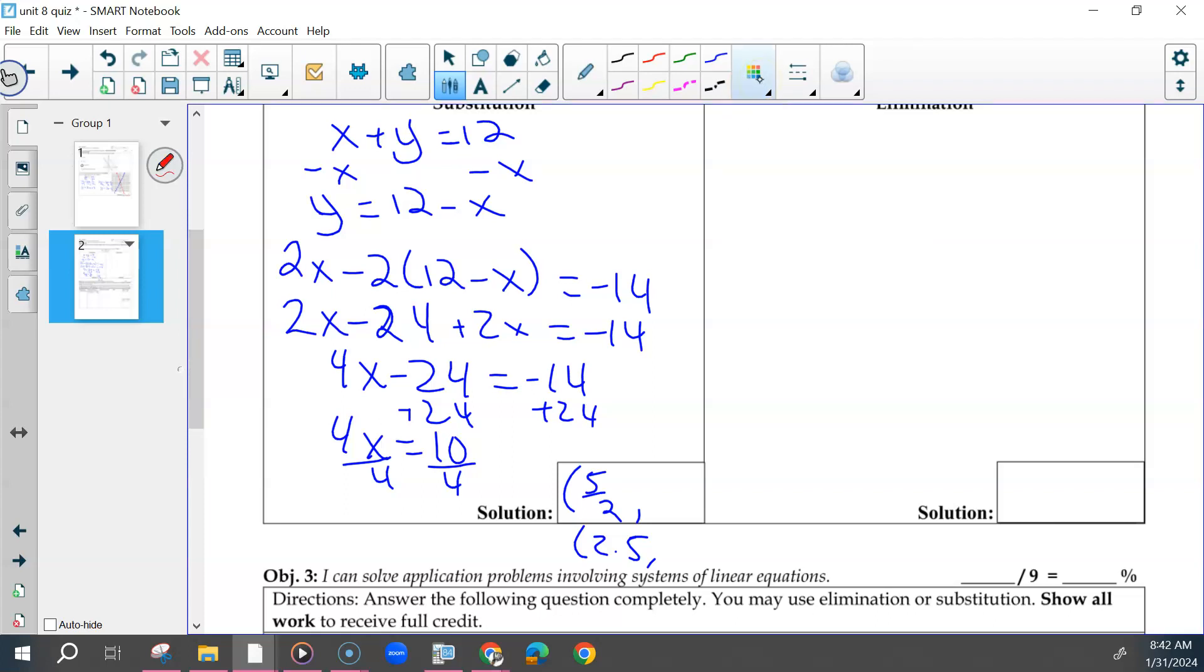And then if you put that back in, the easiest equation to put it back in would be this one. So y equals 12 minus 2.5, which is 9.5.